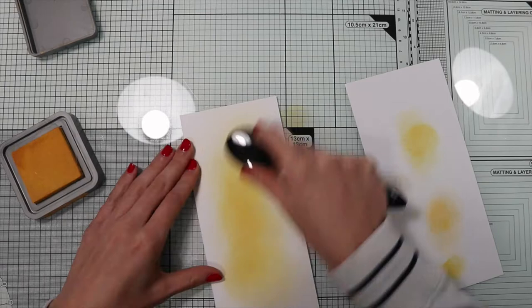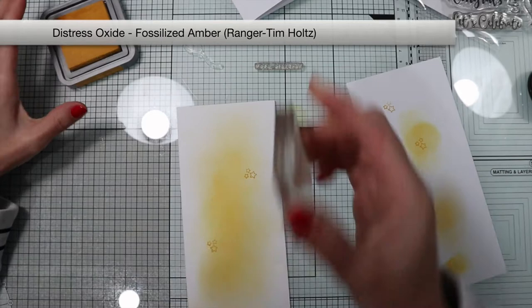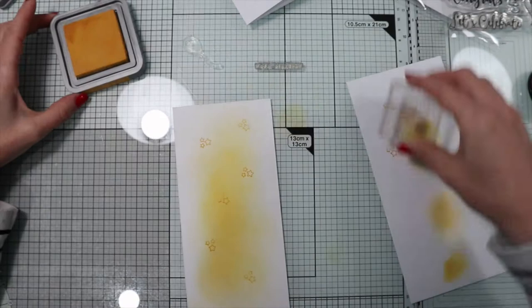Sometimes I stamp with the first generation ink, sometimes with the second or third one, thus creating stamps with different intensities of color.